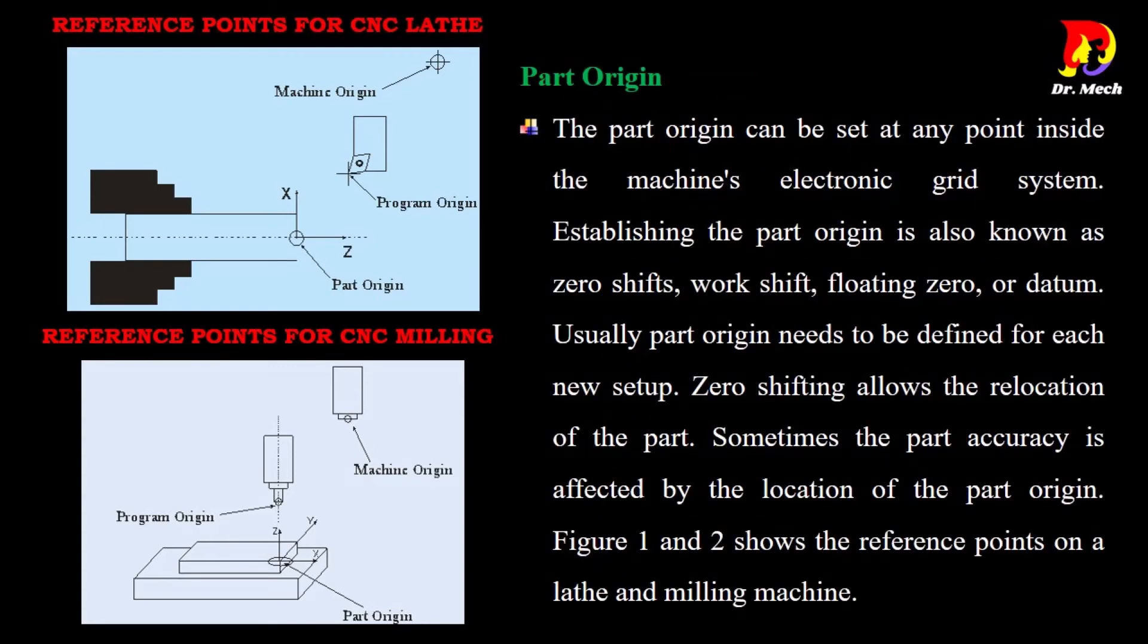Part origin: The part origin can be set at any point inside the machine's electronic grid system. Establishing the part origin is also known as zero shifts, work shift, floating zero, or datum. Usually part origin needs to be defined for each new setup. Zero shifting allows the relocation of the part.